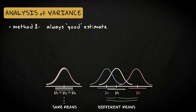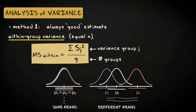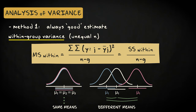The first method, which is robust whether the population means differ or not, estimates the population variance using the within-group variance — the variance within each group, averaged over the groups. If the group sizes are equal, the formula for estimating this variance is very easy: the variances are added and then divided by the number of groups. If the group sizes differ, we employ a different formula, calculating sums of squares in each group.